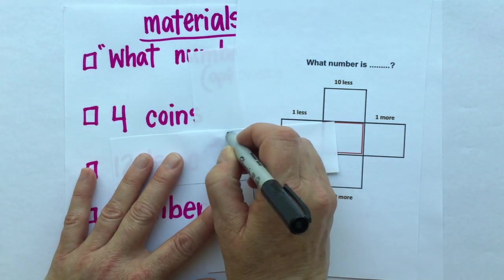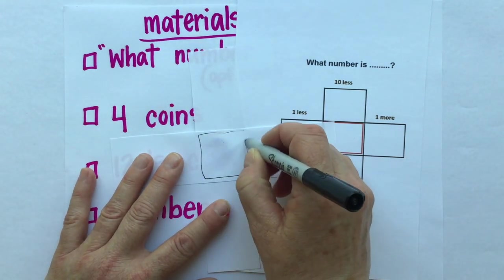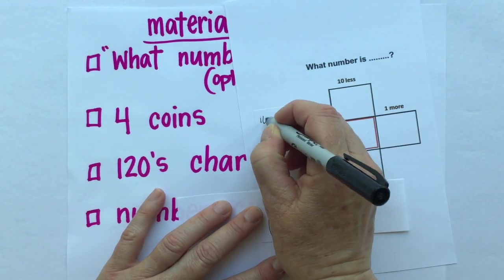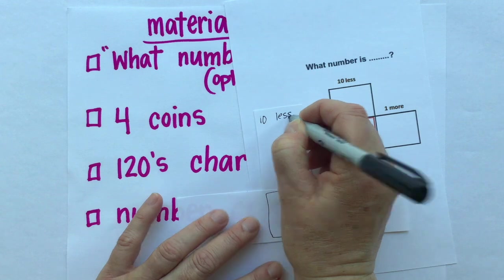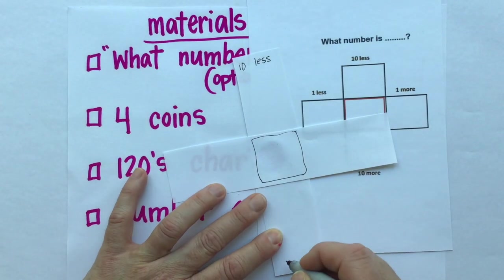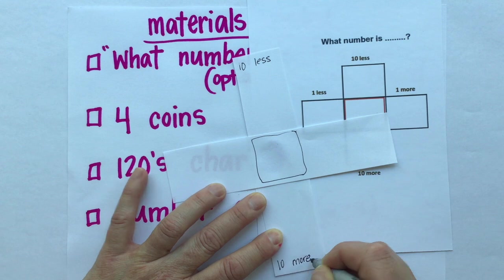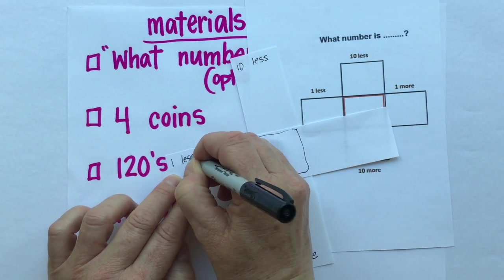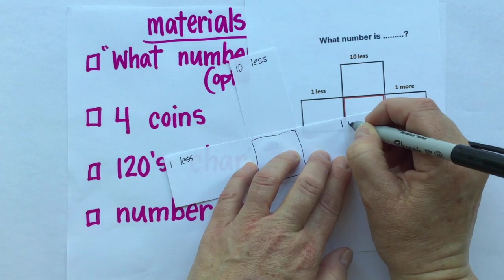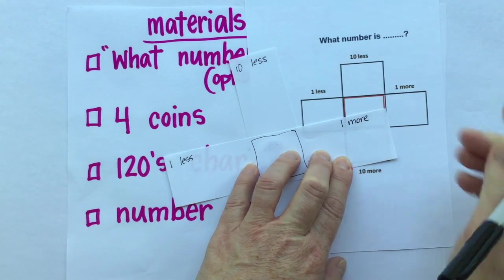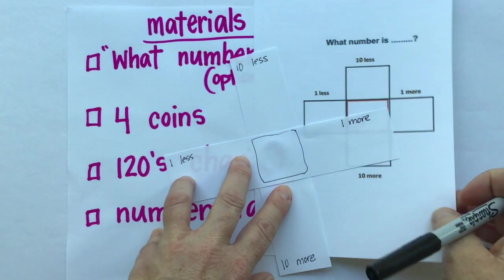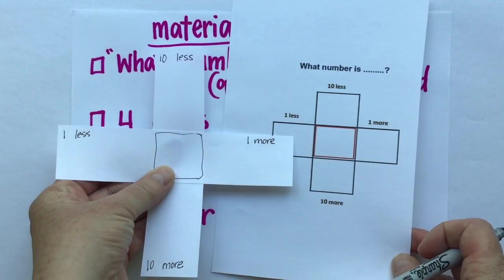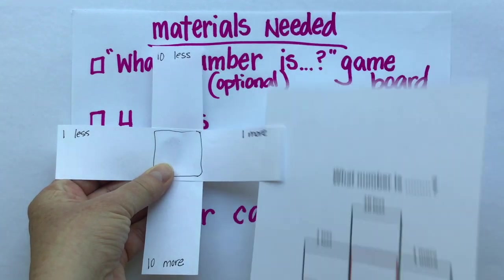The number that we are going to start with, we'll put in the middle, and then we're looking for ten less, ten more, one less, and one more on the hundreds chart. So you'll just need to label your game piece just like the game board that I sent.